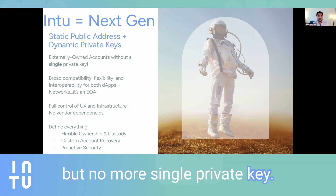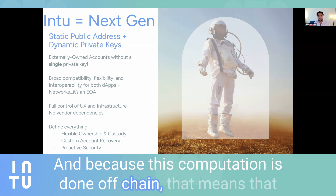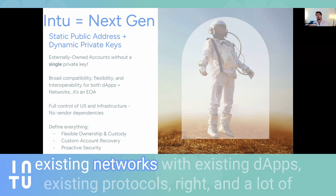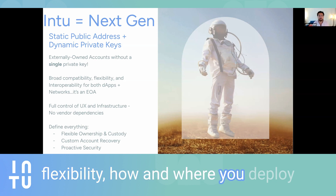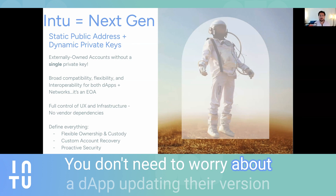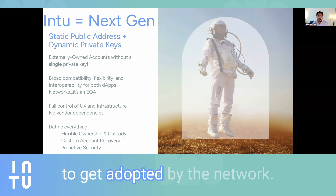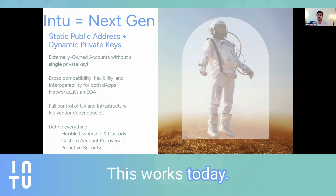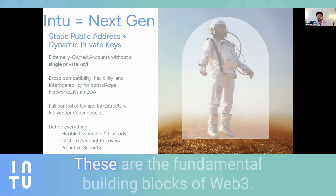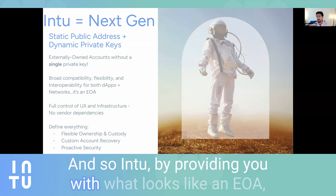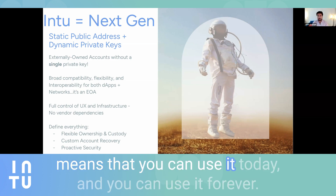The end result is an externally owned account — an EOA. As far as the network is concerned, it looks like it's coming from a normal account, but with no more single private key. Because this computation is done off-chain, that means right out of the box today, day one, you have broad compatibility with existing networks, existing dApps, and existing protocols. You don't need to worry about a dApp updating their version and breaking your protocol, or whether a consensus change or EIP will get adopted by the network. This works today, it's backwards compatible, and it will continue to work tomorrow.